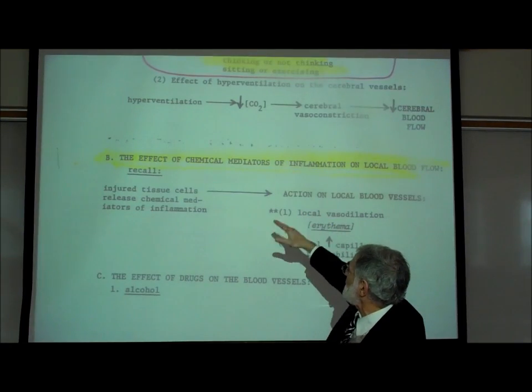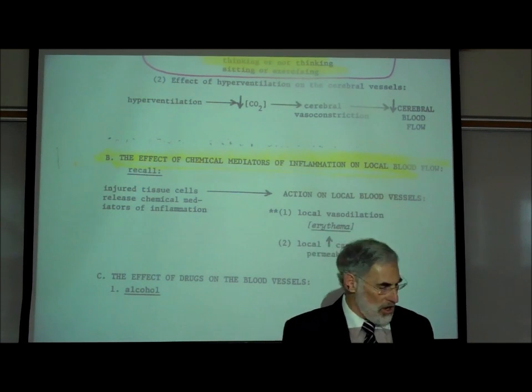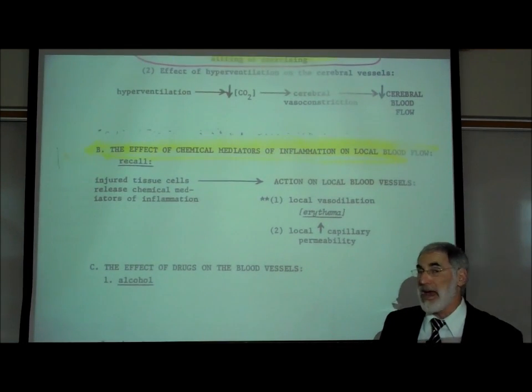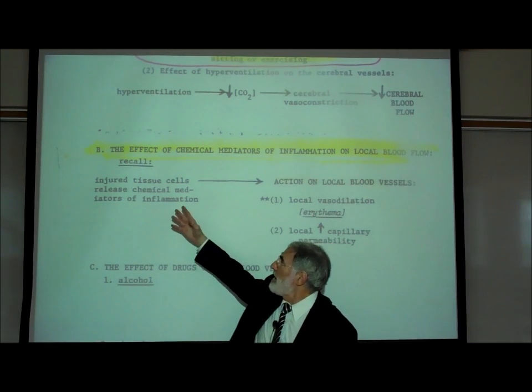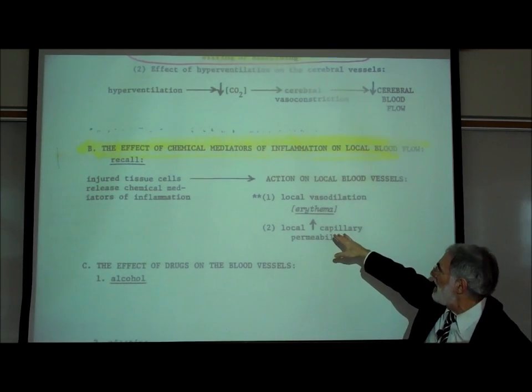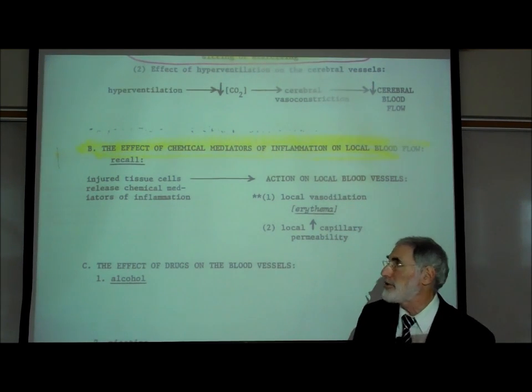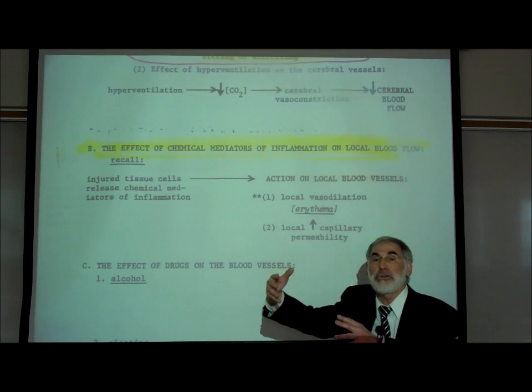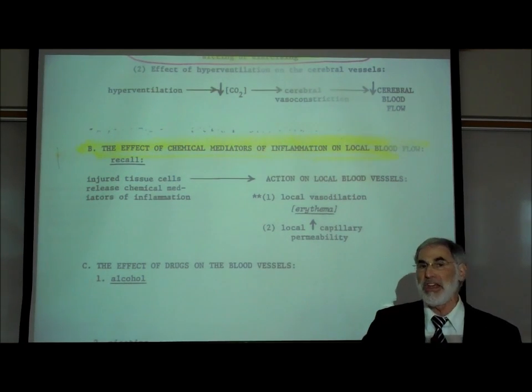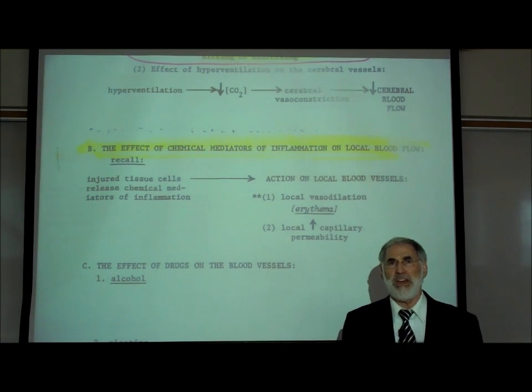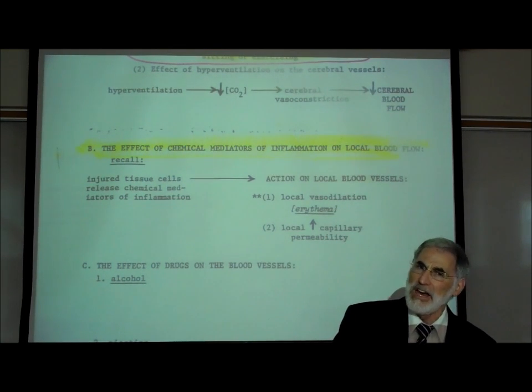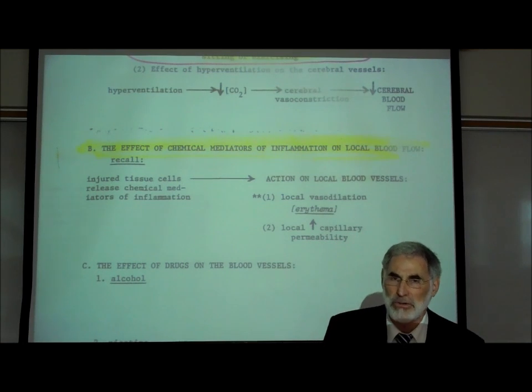What we've written next is the effect of chemical mediators of inflammation on the blood vessels at the localized area of inflammation. We have previously learned back in Section C, when we talked about inflammation, that many of the chemical mediators of inflammation, such as histamine, cause localized vasodilation. They cause the localized blood vessels at the site of injury or inflammation to widen, increasing blood flow. This increased flow of warm red blood to the injured site is known as erythema. The area gets all red. And the function of that is to increase the delivery of white blood cells and antibodies to the site of injury, and also increase the delivery of oxygen and nutrients to the injured tissue.